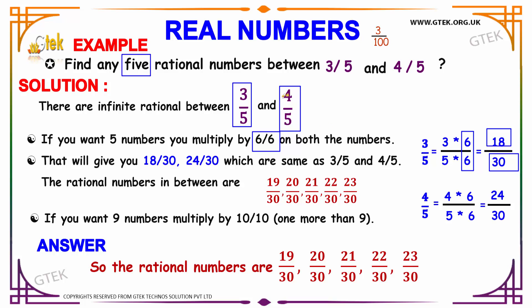Similarly, for 4/5, we multiply 6 on both terms — numerator and denominator. On multiplying 4 × 6, it's 24, and 5 × 6, it's 30.